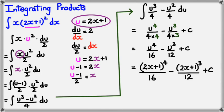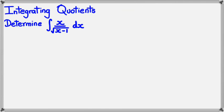That's about it for integrating products. What you can do, if you have time, is differentiate the result to check you get x multiplied by (2x + 1) squared. With integrating quotients, which is the next example, it's pretty much the same thing — you substitute what u is, figure out x in terms of u, and do the whole process again.